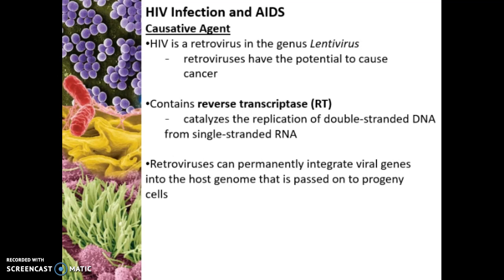HIV is caused by a retrovirus, and this retrovirus is in the genus lentivirus. So if you need to know the causative agent of HIV or where that virus is found, the proper genus is lentivirus. The retroviruses in general have the potential to cause cancer, and the reason for this is that they are able to integrate into the host DNA.